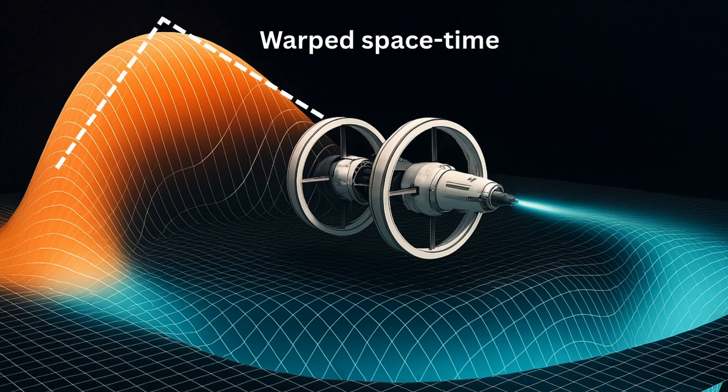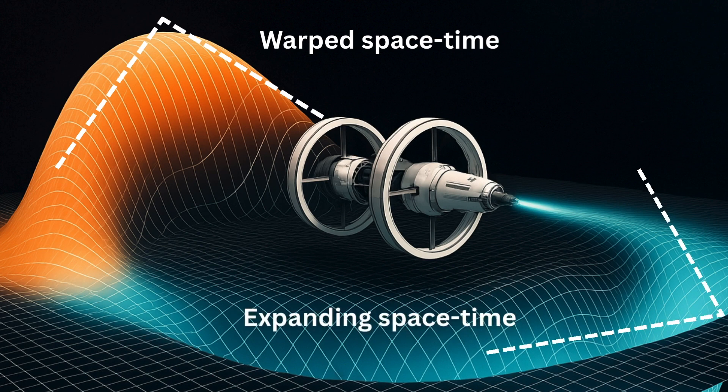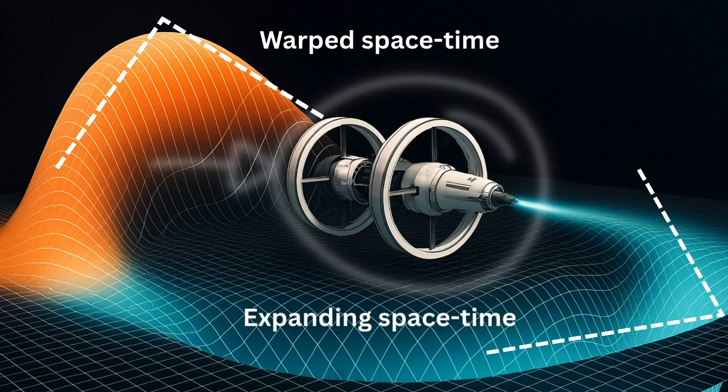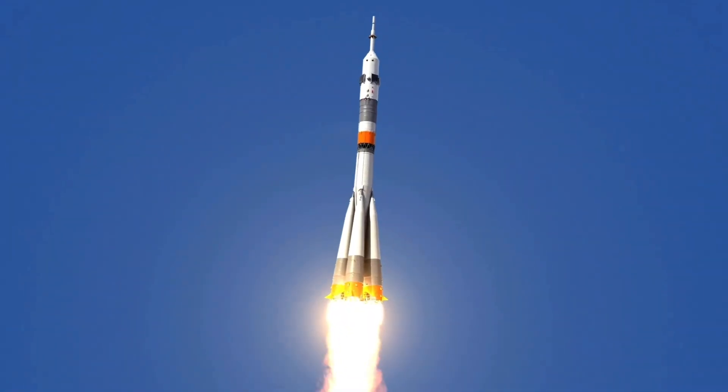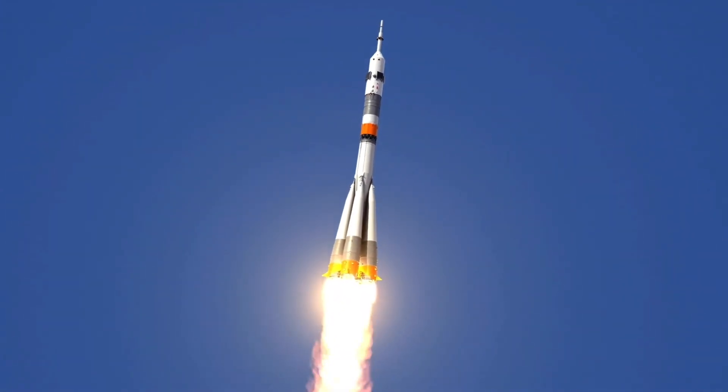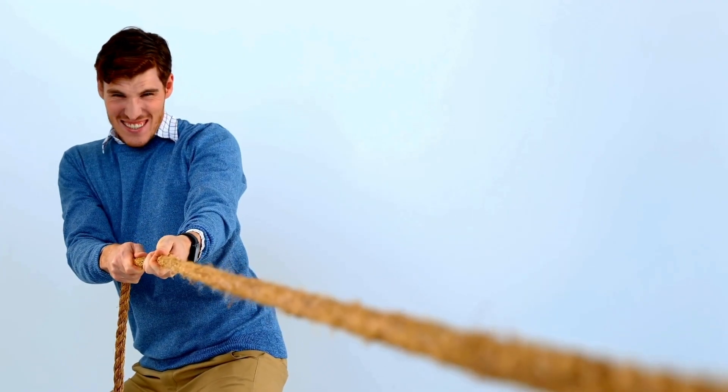So how is that even possible? A warp drive doesn't work like a conventional engine. It doesn't burn fuel, it doesn't shoot plasma, it doesn't push the ship forward. Instead, it uses a special form of energy to bend the structure of space-time itself. Put simply, it doesn't go to the destination, it pulls the destination toward itself.